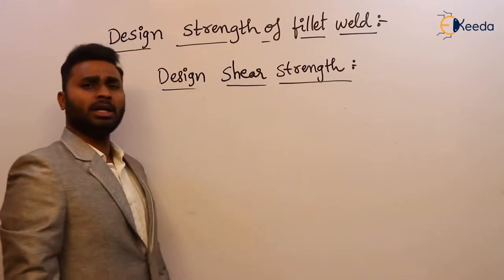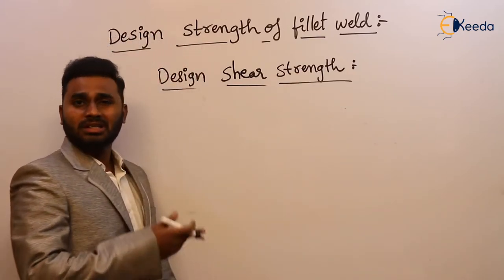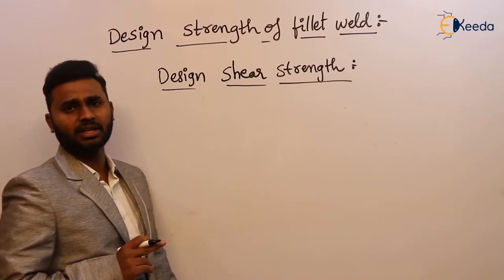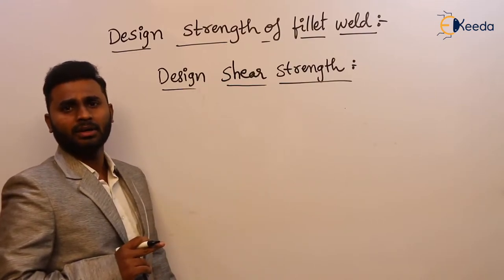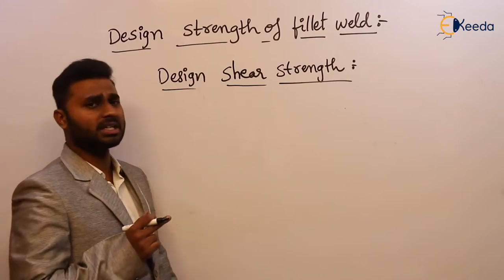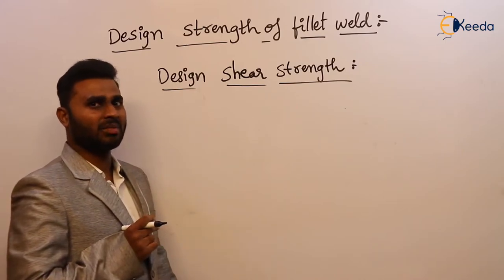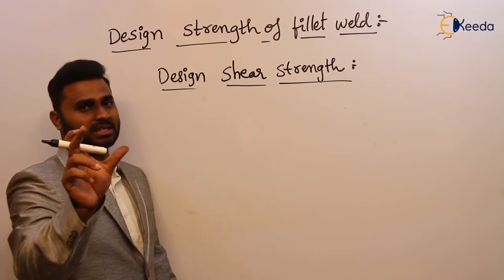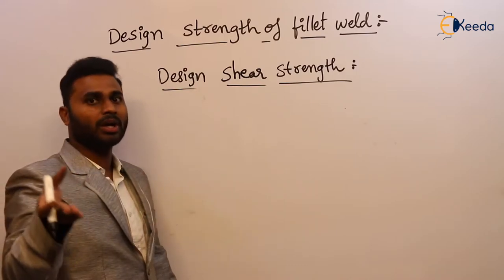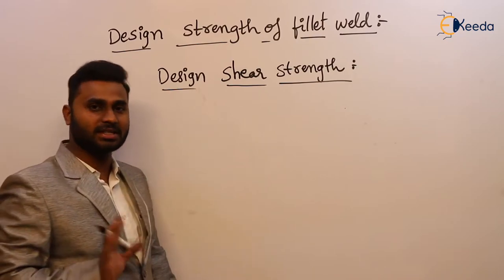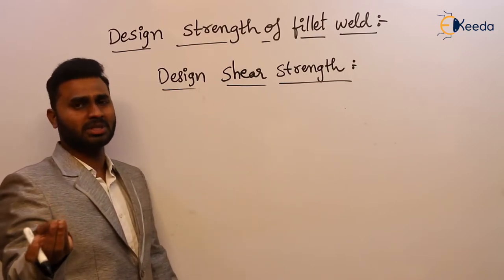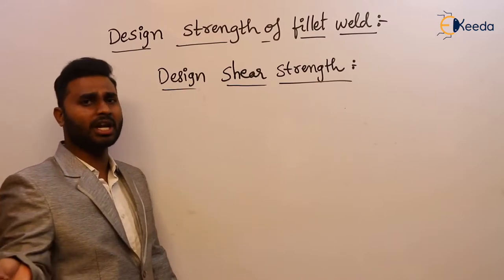Before going into this shear strength, what is the format of writing the strength? What is the formula? Strength is nothing but permissible stress — or stress prescribed in the code — multiplied by the area undergoing that stress. So simply, strength is stress into area.